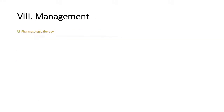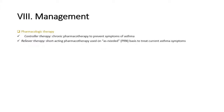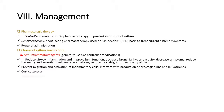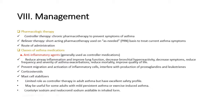Pharmacologic therapy: Controller therapy — chronic pharmacotherapy to prevent symptoms of asthma. Reliever therapy — short-acting pharmacotherapy used on an as-needed (PRN) basis to treat current asthma symptoms. Classes of asthma medications: A. Anti-inflammatory agents, generally used as controller medications — reduce airway inflammation, improve lung function, decrease bronchial hyperreactivity, decrease symptoms, reduce frequency and severity of exacerbations, reduce mortality, and improve quality of life. They interfere with production of prostaglandins and leukotrienes.